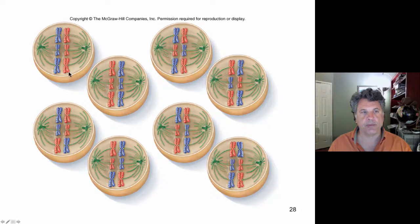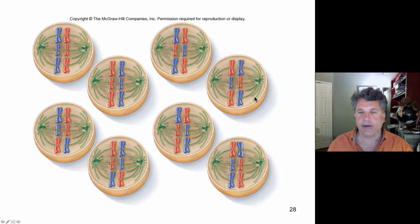So for example, in meiosis I, we could have the homologs line up so that all three blues are on one side of the plate and all three reds are on the other side, or vice versa. On the other hand, we could have two of the blues on the left and one red, with two reds and one blue on the other side. And we will see later on that this is the basis for Mendel's second law of inheritance, the law of independent assortment of genes, because genes are carried on chromosomes.